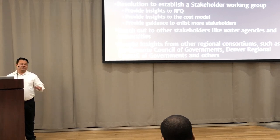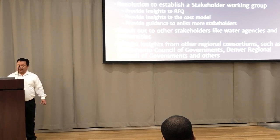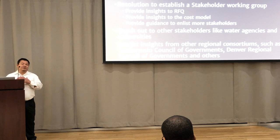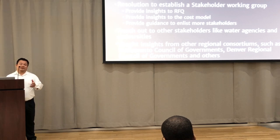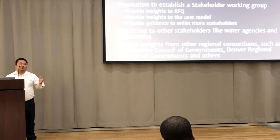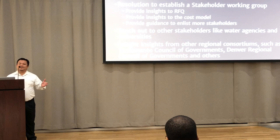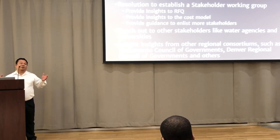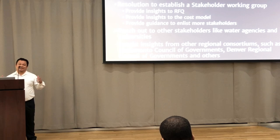We're getting insights from other regional consortiums such as the Sacramento Council of Governments and the Denver Regional Council of Governments — they've been doing something close to this but at a much smaller scale. Denver's area is less than half of ours. The Sacramento Council of Governments covers about 4,000 square miles. What we're looking at is 24,000 square miles — the size of a small country or state. With 3-inch and 6-inch datasets including orthos and obliques, that's a lot of data.